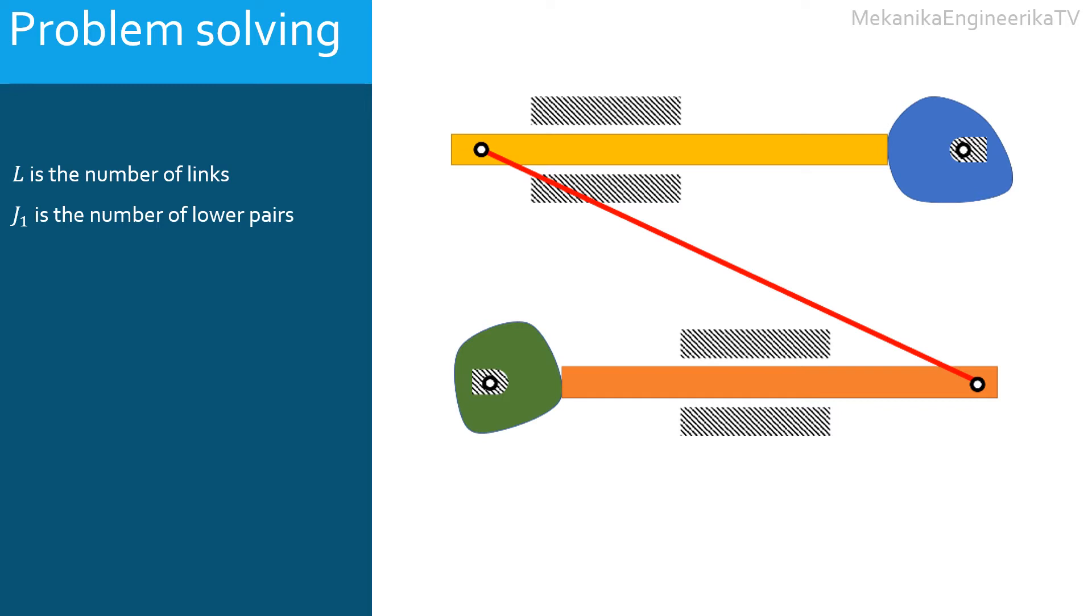Third, we need to determine J2, the number of higher pairs, or the number of joints allowing each 2 degrees of freedom.